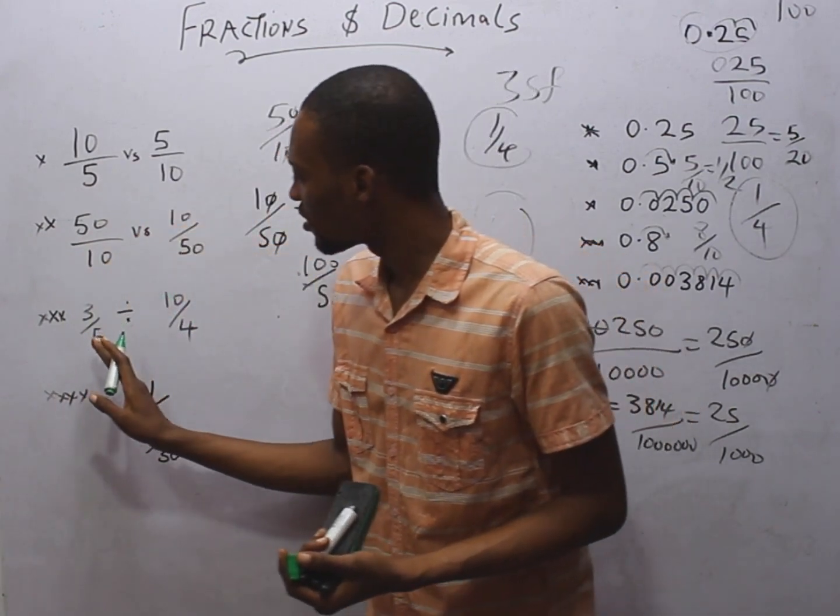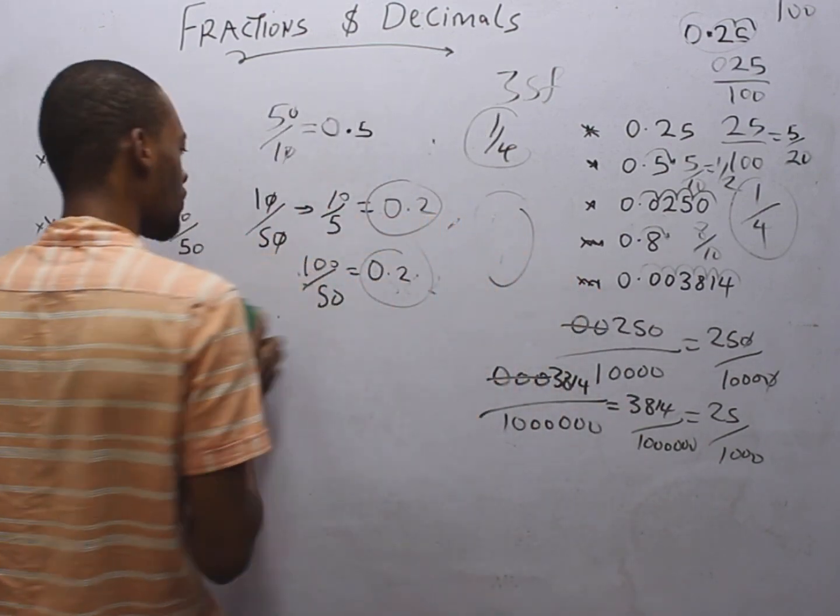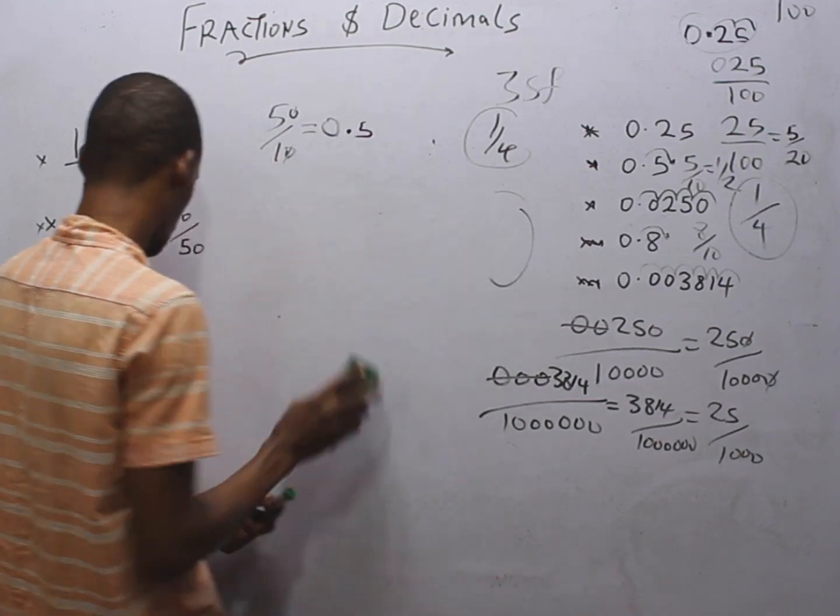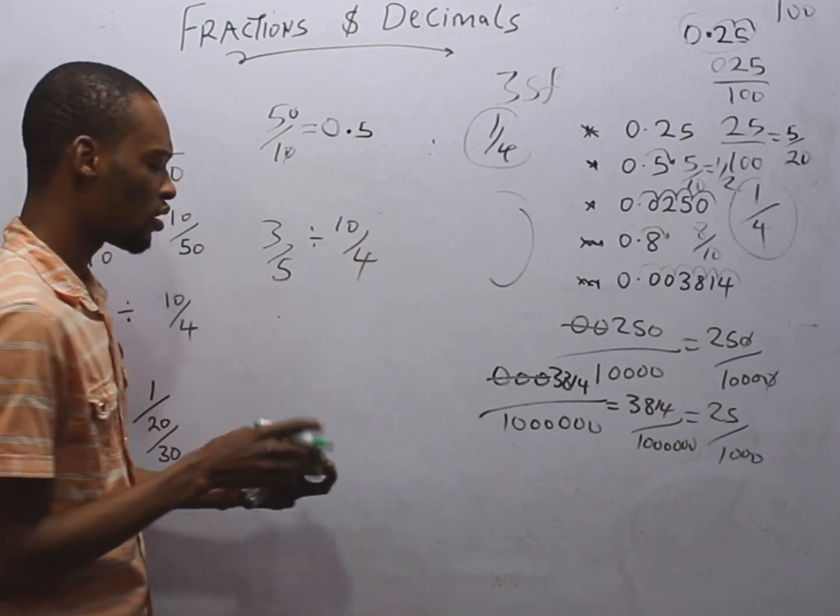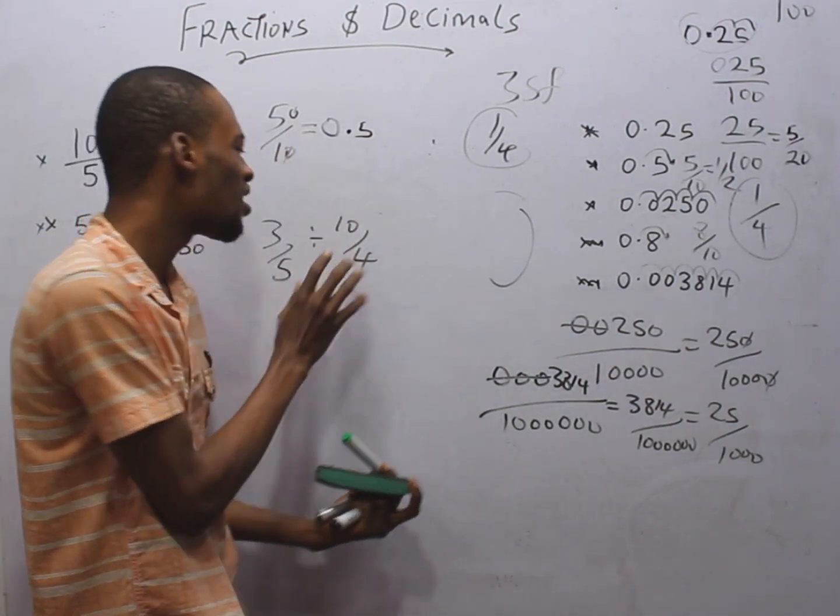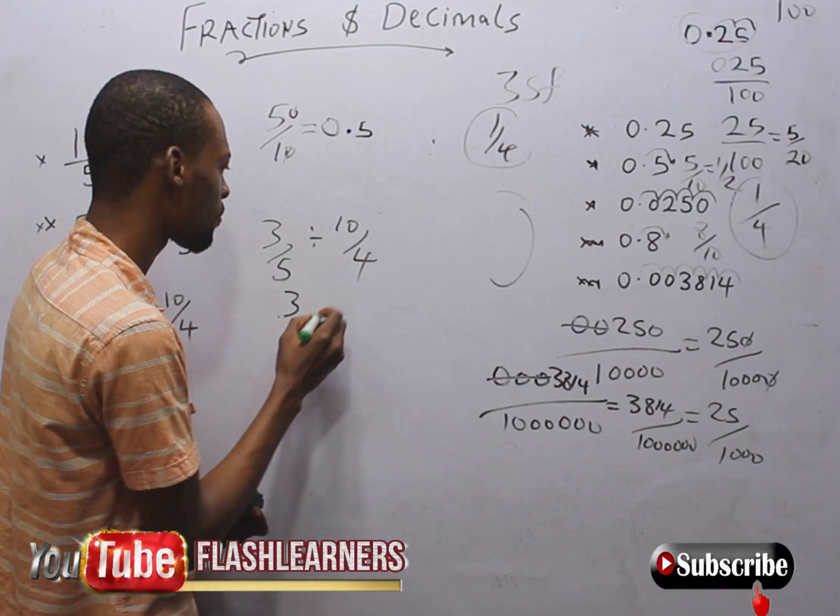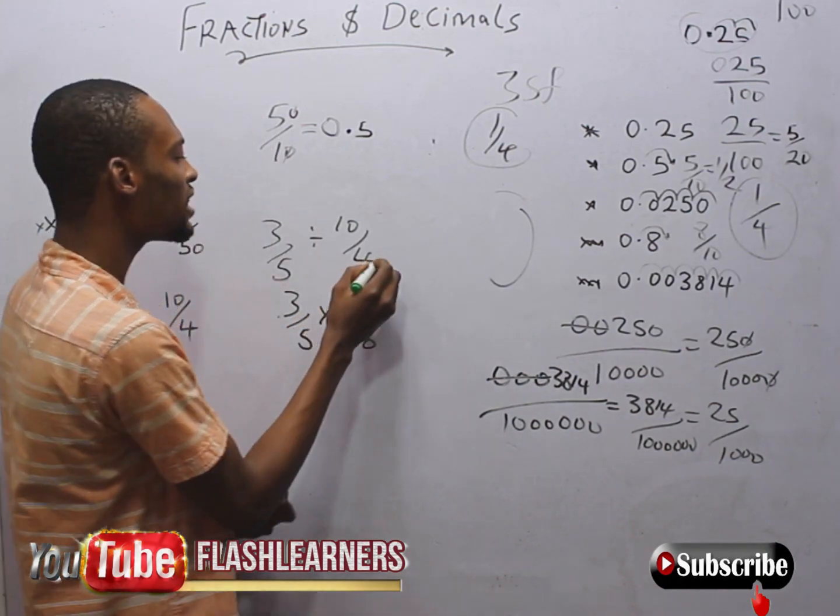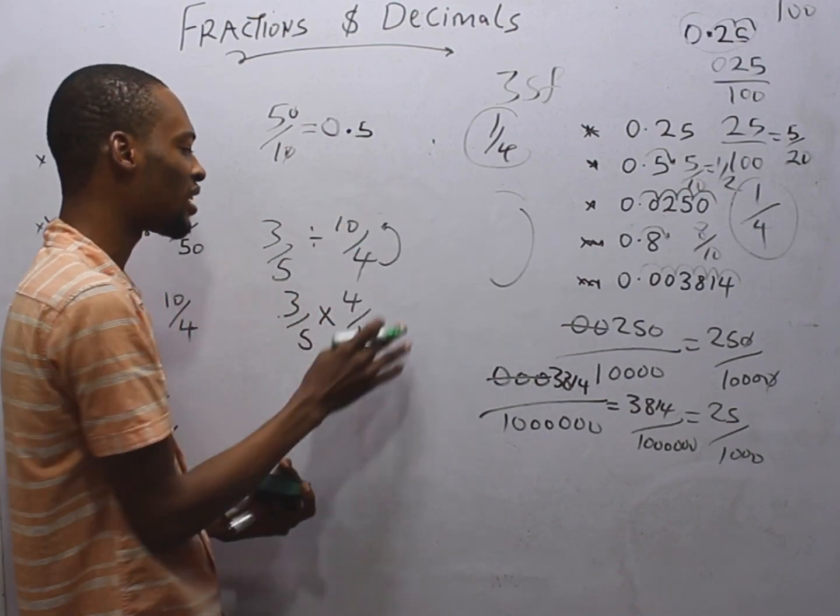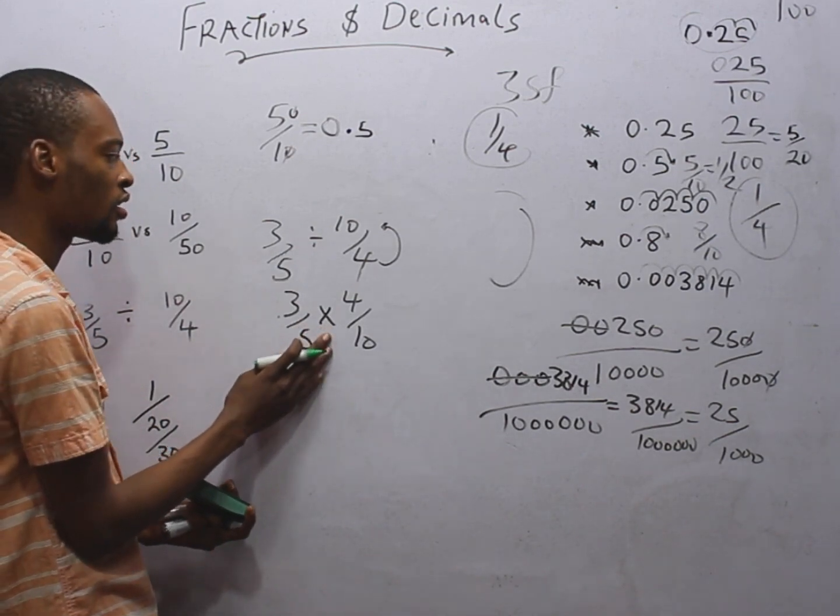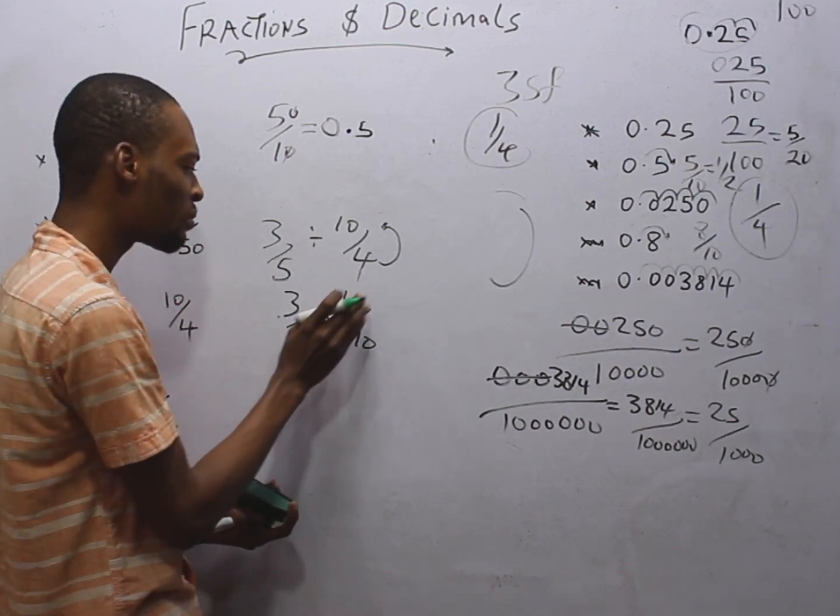Now, what about this? 3 over 5 divided by 10 over 4. If you are doing something like this, 3 over 5 divided by 10 over 4, what you should always do is to change the division to multiplication. How do you do that? Simply say, 3 over 5 times 4 over 10. So, immediately you invert this. The numerator goes up, the denominator goes down, and the numerator comes down. This automatically changes to multiplication.